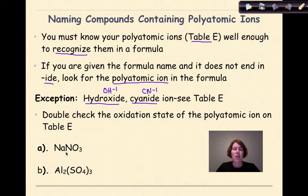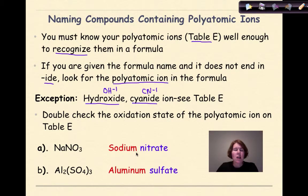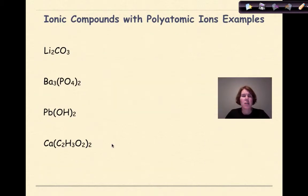Looking at NaNO₃: NA is sodium — the first part of the name is sodium, not modified. Then NO₃ — I look that up on Table E and find it is nitrate. So the compound is sodium nitrate. Next, Al₂(SO₄)₃: aluminum is my metal, not modified — so aluminum. SO₄ is sulfate. So the compound is aluminum sulfate. Essentially you are translating what you see and checking yourself on Table E.